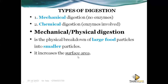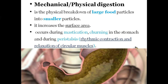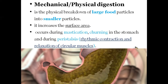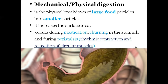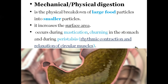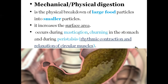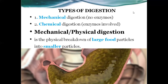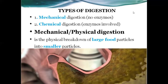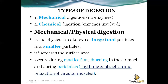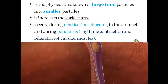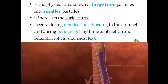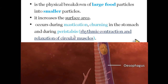Physical digestion occurs during mastication and churning. Churning is found in the stomach. During peristalsis, as food is going down, we call it peristalsis. Once the food has gone down, you cannot bring it back — it only moves in one direction.